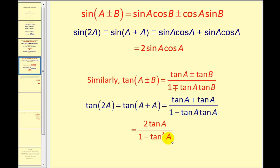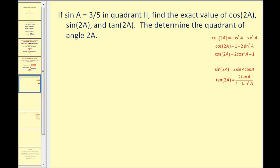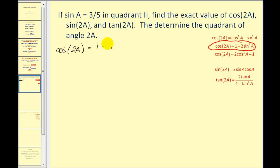Let's take a look at a couple of problems. We have sine A equals three-fifths in quadrant two. We want to find the exact value of cosine two A, sine two A, and tangent two A, and then determine the quadrant of angle two A. We can find cosine two A with just the given information since we have sine A, so we use one minus two times sine squared A.